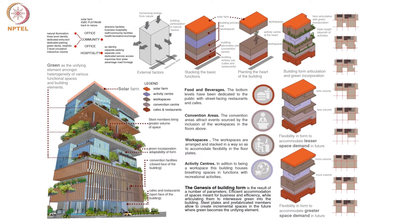At every third level we had extended green terraces all around. The section makes the massing clear: we have the convention layers below, then three floor plates of transparent offices with green around them, then another three levels of offices on top. Between them we have the forest floor, which is a labyrinth of all facilities — a place that establishes social balance and brings work and play together.